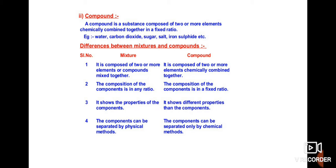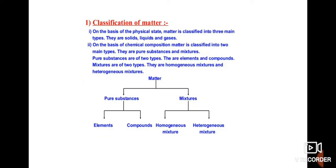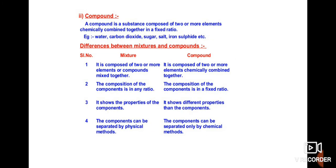Mixtures are substances composed of two or more elements or compounds mixed together. The key difference: a mixture is composed of two or more elements or compounds mixed together, whereas a compound is composed of two or more elements chemically combined. In a mixture, the composition has no fixed ratio, whereas a compound's composition is always fixed.